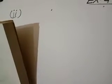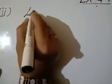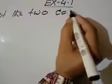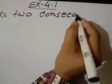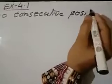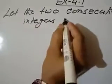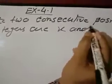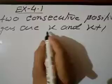Point number 2: the product of 2 consecutive positive integers is 306. We need to find the integers. Let the two consecutive positive integers be x and x plus 1.